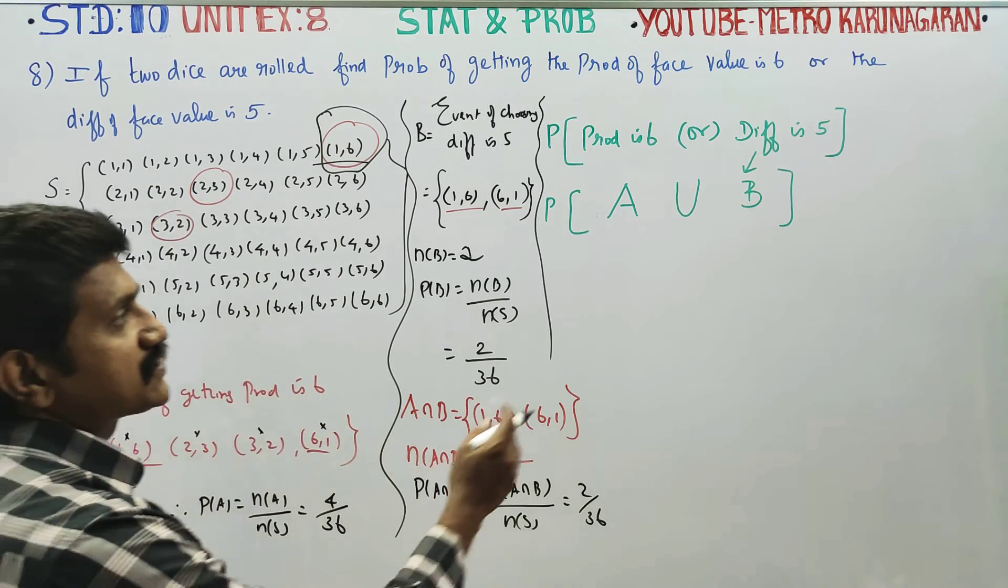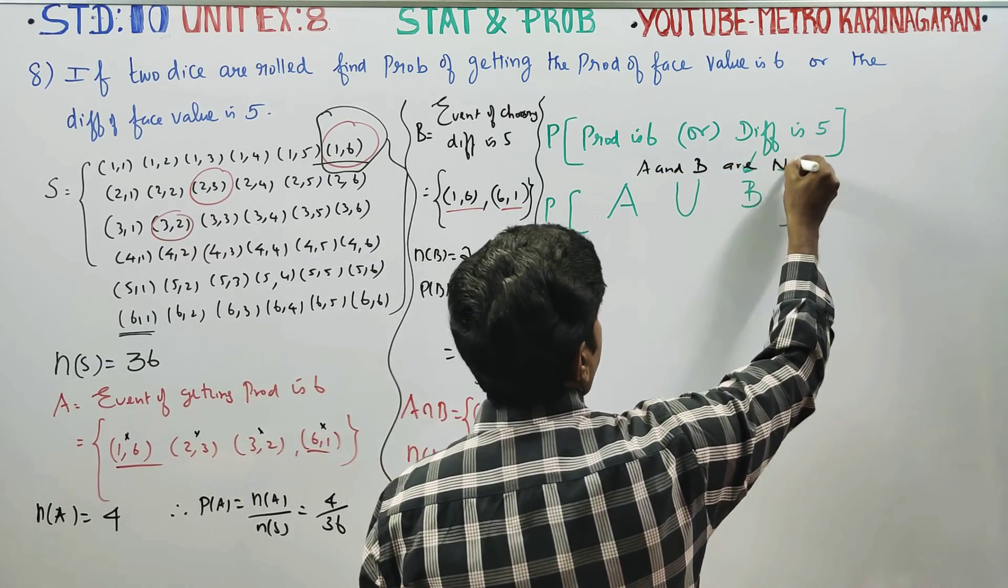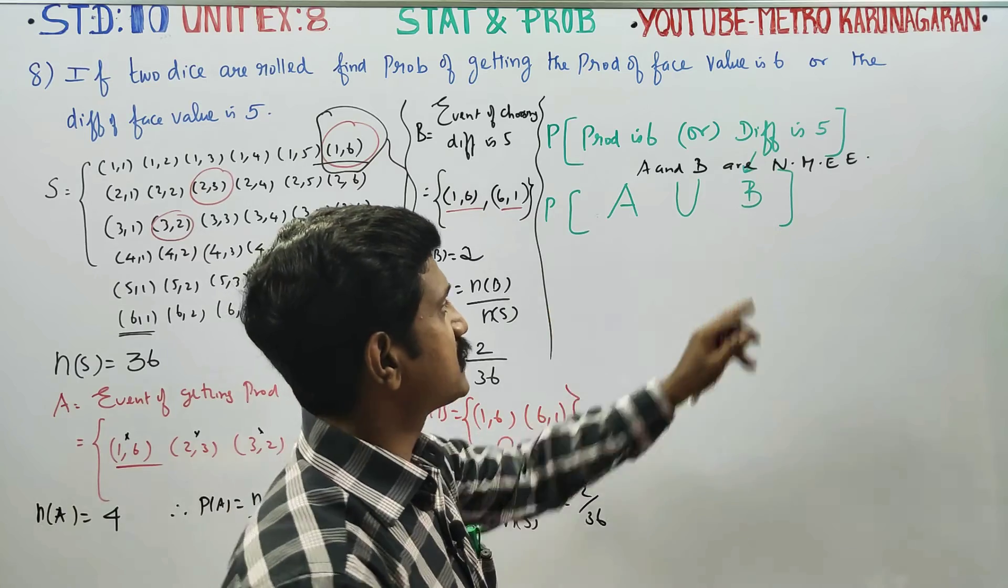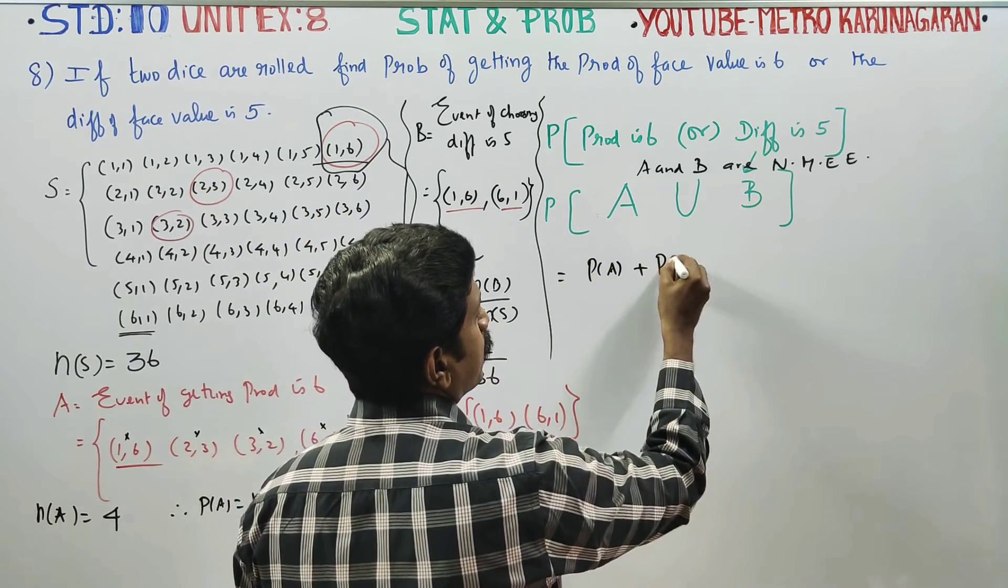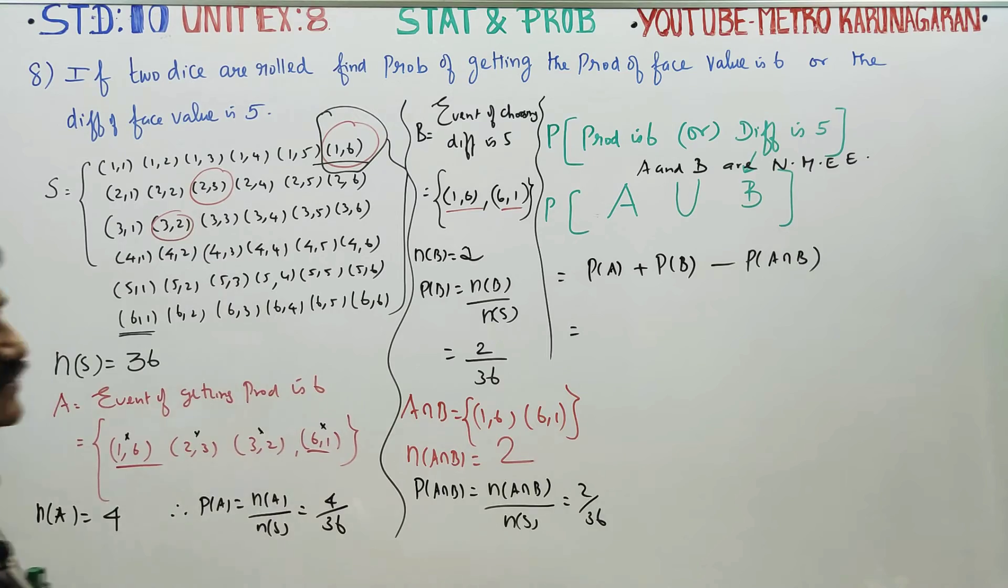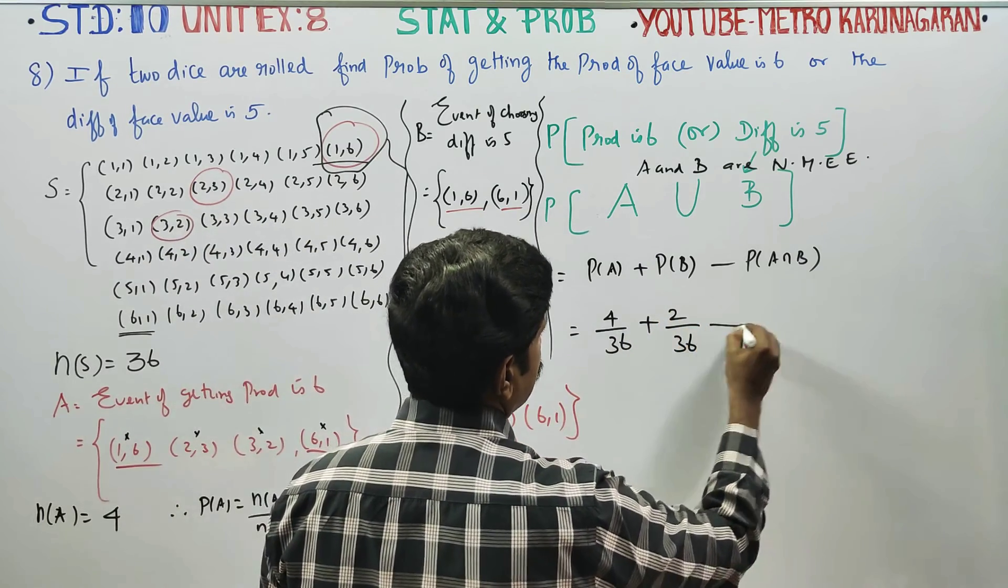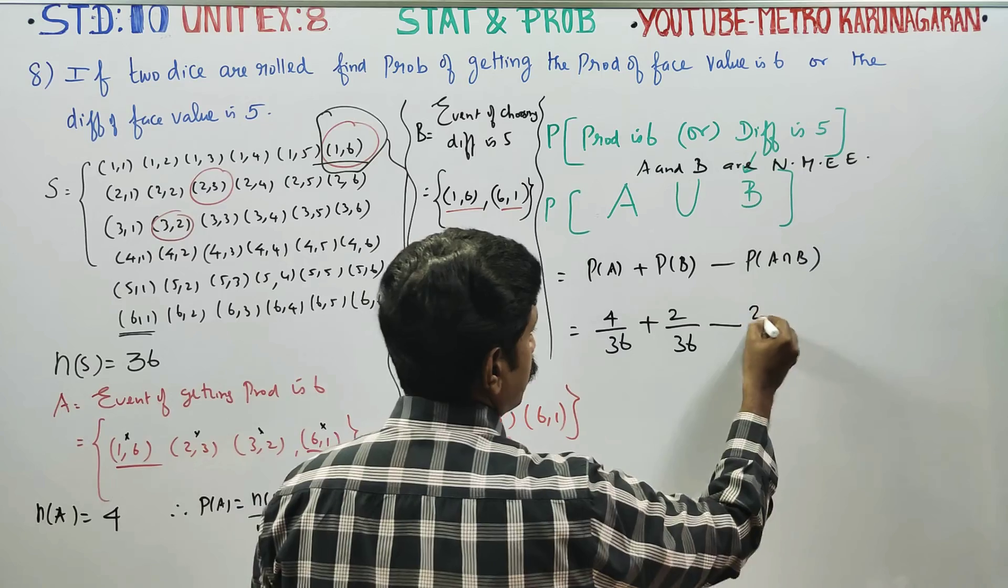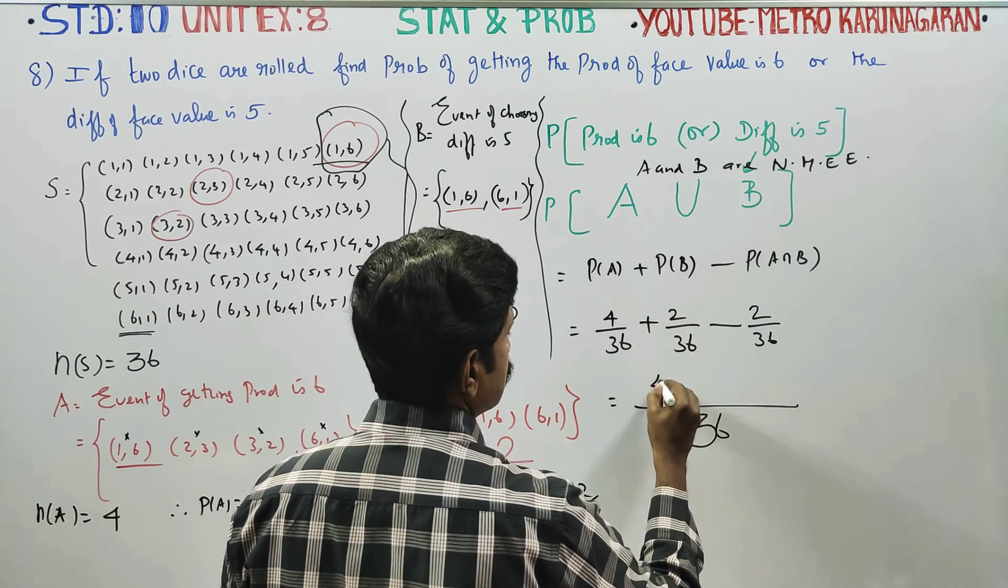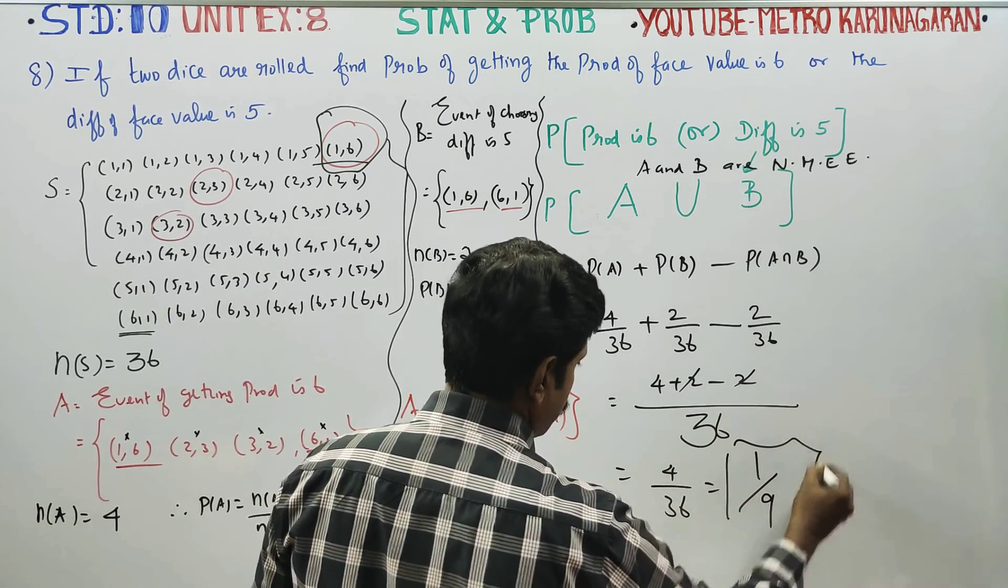Now, we will enter into this formula. Since there is intersection, A and B are not mutually exclusive events. The formula is P of A union B equals probability of A plus probability of B minus probability of A intersection B. That's 4 by 36 plus 2 by 36 minus 2 by 36. Taking LCM of 36: 4 plus 2 minus 2 equals 4. So 4 by 36, which cancels to 1 by 9.